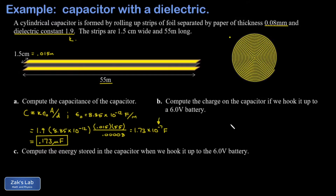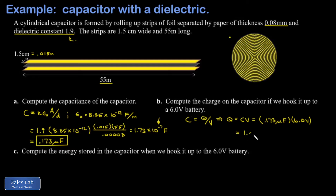In part B, we want to get the charge on this capacitor if we hook it up to a 6-volt battery. This goes back to the basic definition of capacitance — it's charge per volt. Solving for charge gives us capacitance times potential difference. Taking 0.173 microfarads multiplied by 6.0 volts and rounding to three significant figures gives 1.04 microcoulombs. The micro prefix, meaning 10 to the negative 6, just tags along through the calculation.